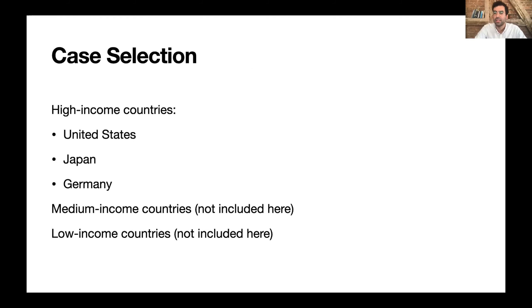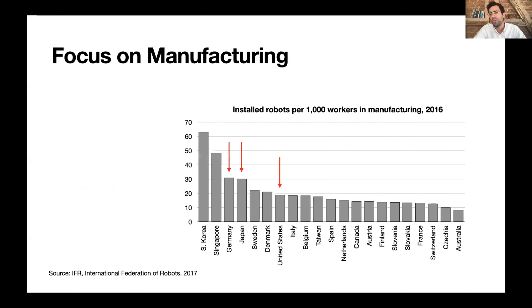I'll dive into empirical support by looking at three high-income countries: the US, Japan, and Germany. I focus first on manufacturing for several reasons: it's essential to my explanation, it's a sector automation theorists often use as an example of what's already happened and will happen in services, and it's easy to measure. Here you see installed robots per thousand workers in manufacturing — Germany, Japan, and the US are toward the front of that pack.